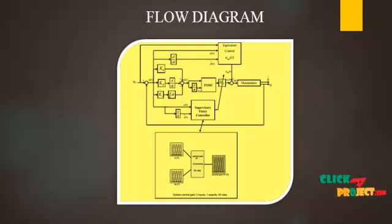And the geometrical locus consisting of the boundaries is called the sliding surface. Next one is the fuzzy control system. It is a control system based on fuzzy logic, a mathematical system that analyzes analog input values in terms of logical variables that take on continuous values between 0 and 1.